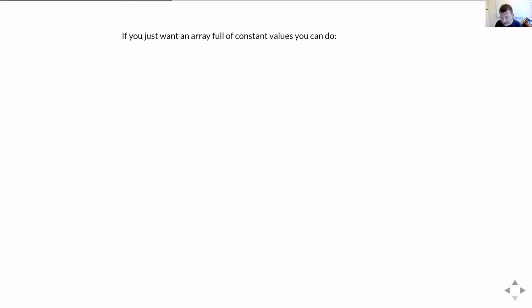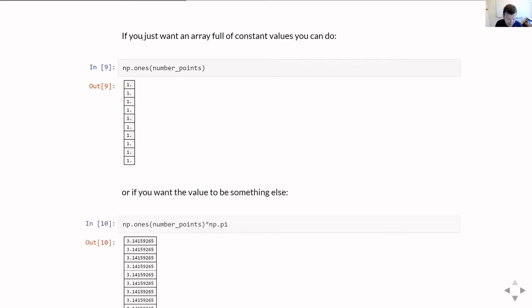If you just want an array full of constant values, then there's a handy np.ones function, which will just create an array full of the value of 1. And you just specify the number of points. Of course, you probably don't want to just have it containing values of 1. So if you want something else, you can just create the array np.ones, and then you just multiply it by whatever you want. In this case, I'm multiplying it by the value of pi, and so I get an array of 10 values, each of which is pi. And you're relying here on the fact that you can do maths on an array and just write out an expression, and numpy will take care of dealing with the fact that one of the things you're multiplying there is an array of numbers, and it will multiply each element by the same value.